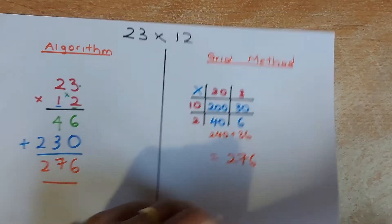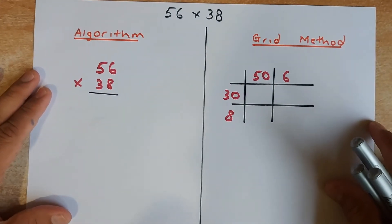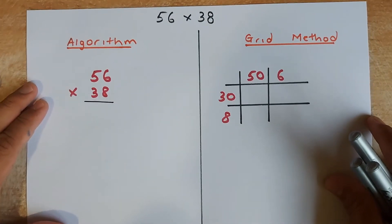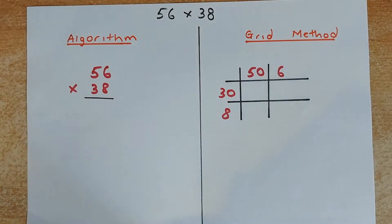Okay, we shall do a couple more examples. And you should be familiar with this as soon as we get over. Okay, the next number is a bit harder — it is going to be 56 multiplied by 38.